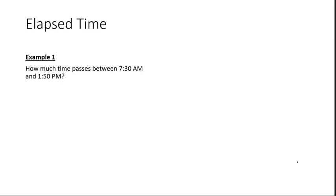To do this, there are different ways you could go about figuring this out, but probably the simplest way would be to count the hours from 7:30 to 1:50. Counting the hours starting at 7:30: one hour takes you to 8:30, two hours to 9:30, three hours to 10:30, four hours to 11:30, five hours to 12:30, and six hours takes you to 1:30.